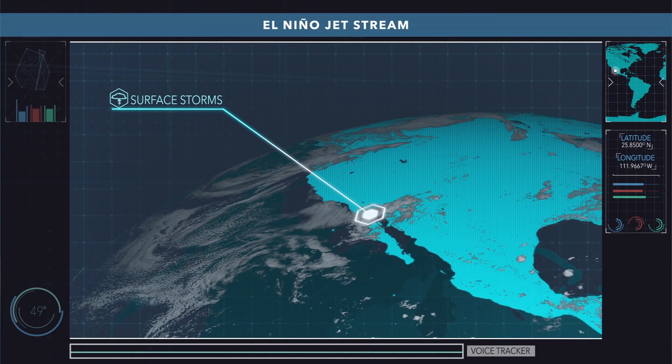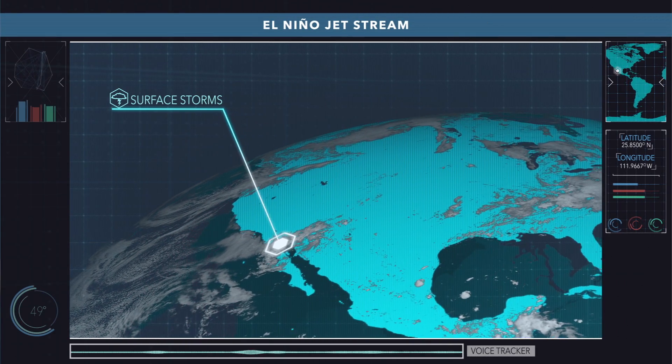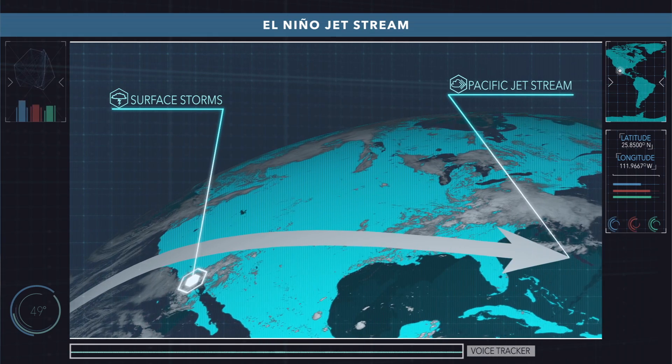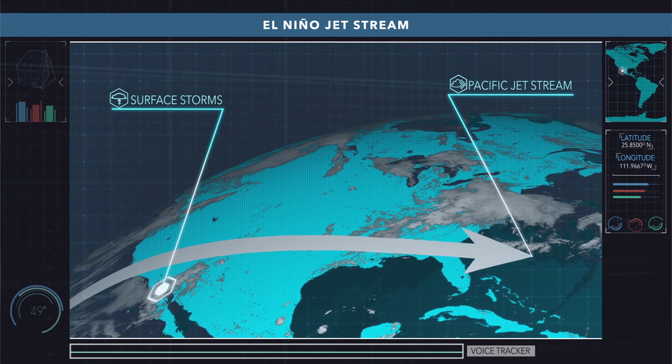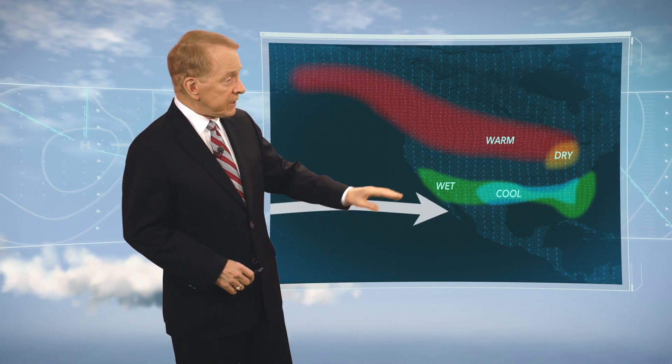Surface storms are usually located in close proximity to a jet stream, which usually means a better chance of rain. This El Niño jet stream graphic shows a somewhat west to east jet stream.